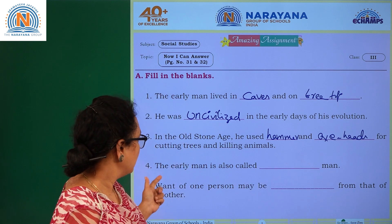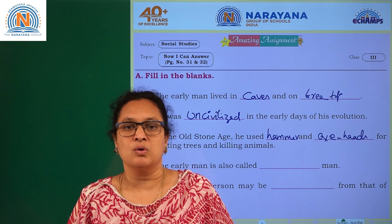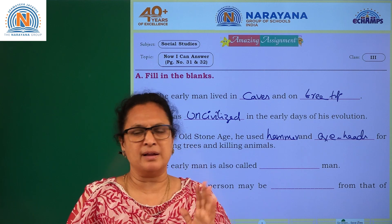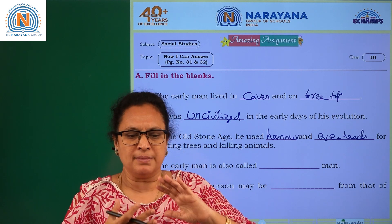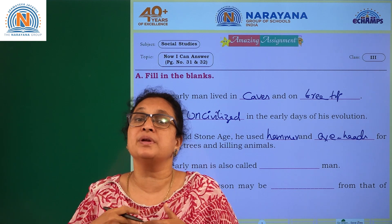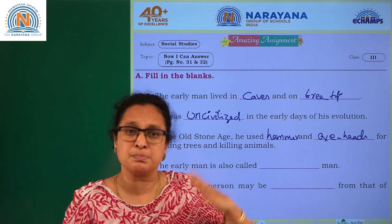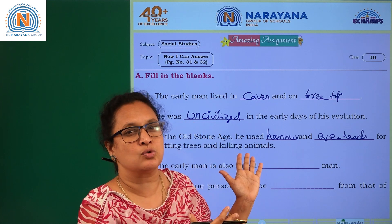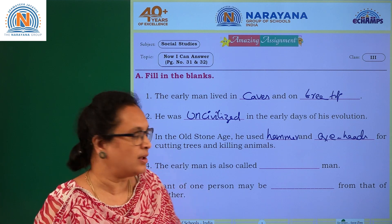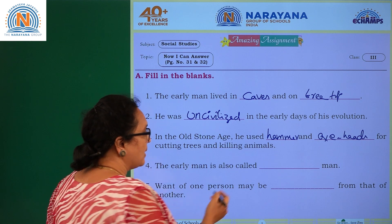Coming to the next one: the early man is also called dash man. He is called prehistoric man. Just like we use 'prepaid' — 'pre' means something that happened long ago. Early man existed more than fifteen hundred million years ago, so the early man is also called prehistoric man.